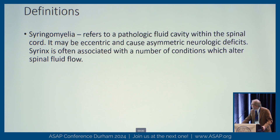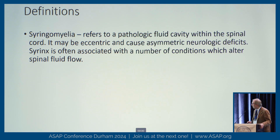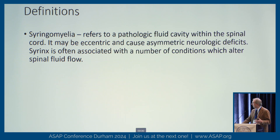We'll start with syringomyelia — it's part of the name of this organization. It refers to a pathologic fluid cavity within the spinal cord. It may be eccentric, it may be central, it may cause asymmetric neurologic deficits, and it's often associated with a number of conditions that seem to have in common an alteration of cerebrospinal fluid flow.